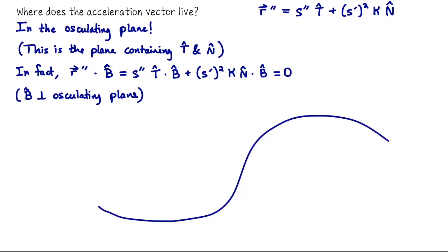Say we have our curve and we're traveling left to right, so the unit tangent vector points in that direction. The acceleration vector is also going to live in this plane — it won't be pointing out of or into the screen at all. It has to live in the same plane as the unit tangent and normal vectors.